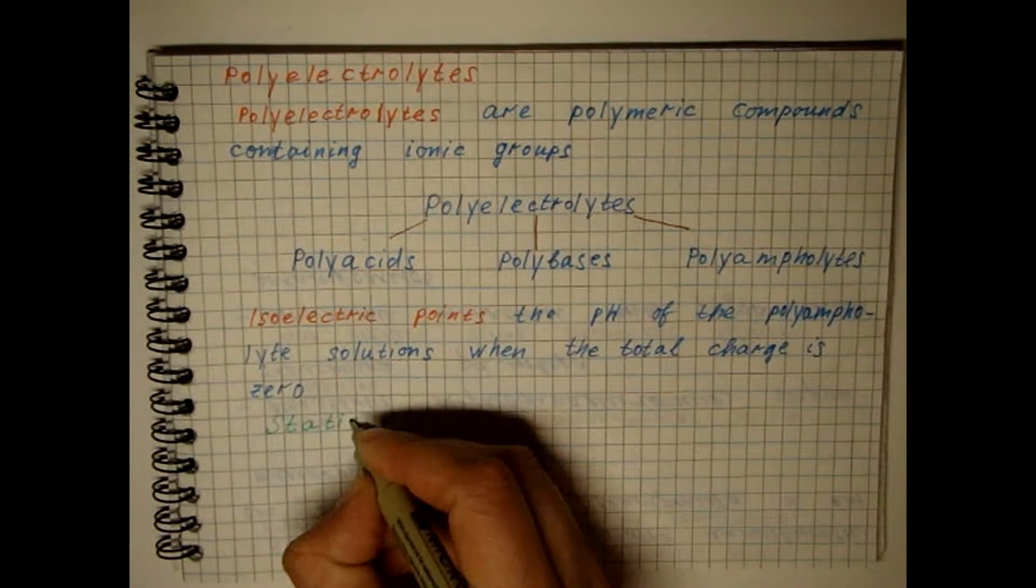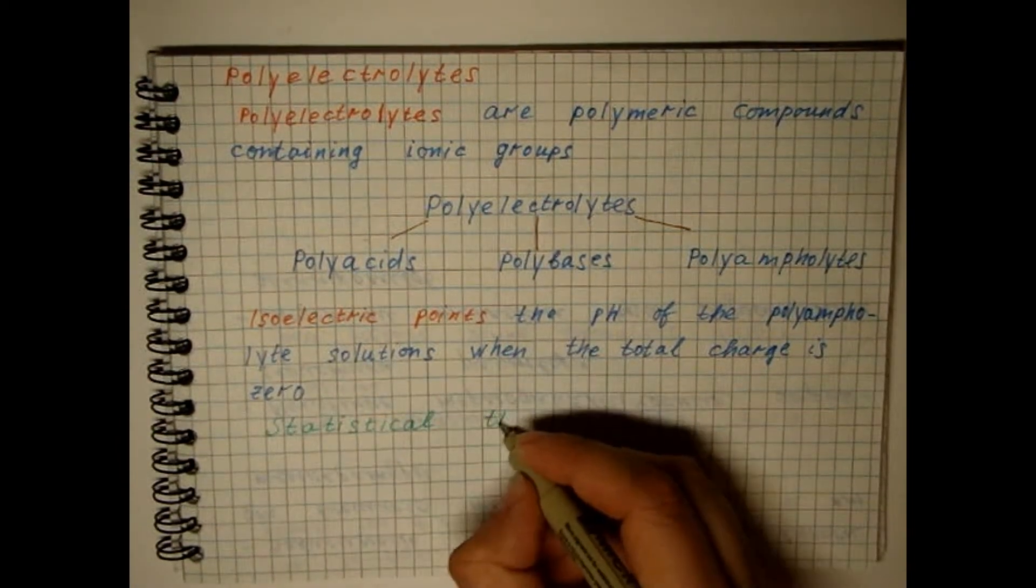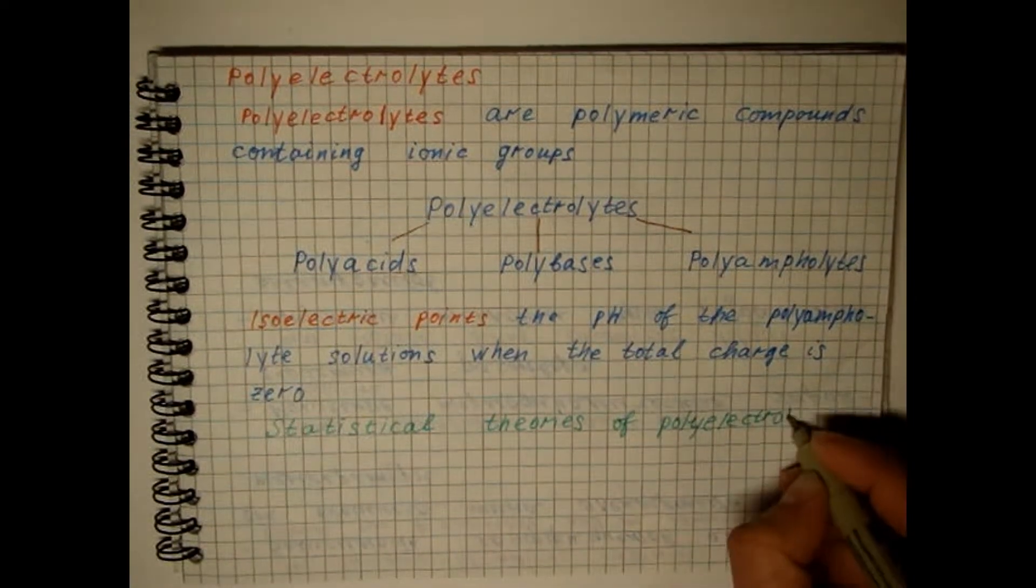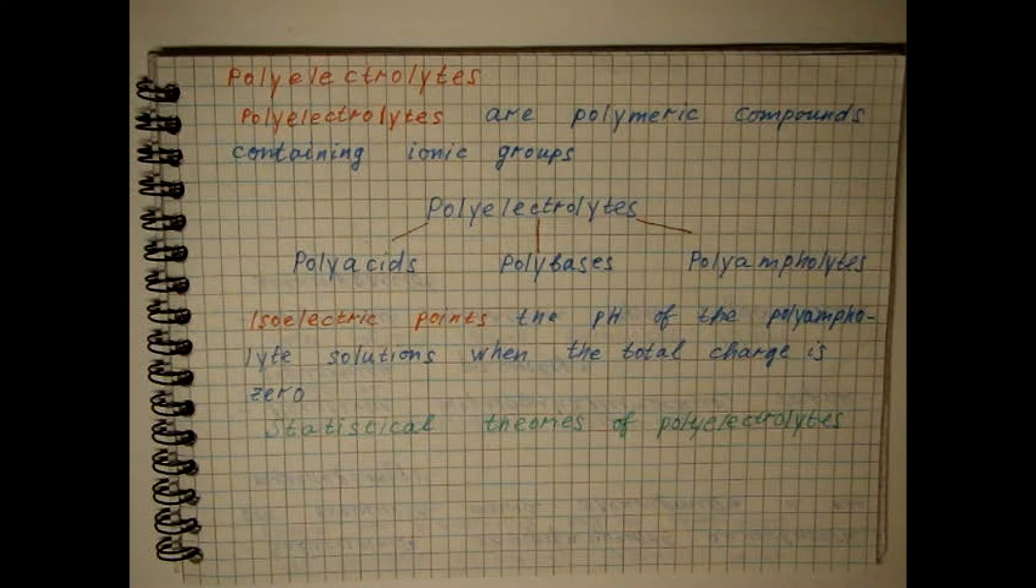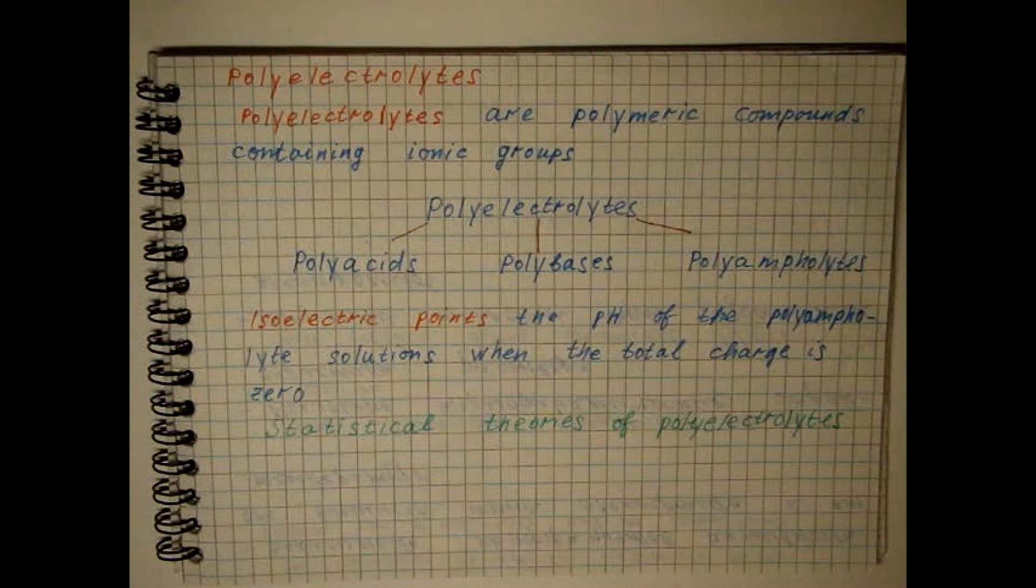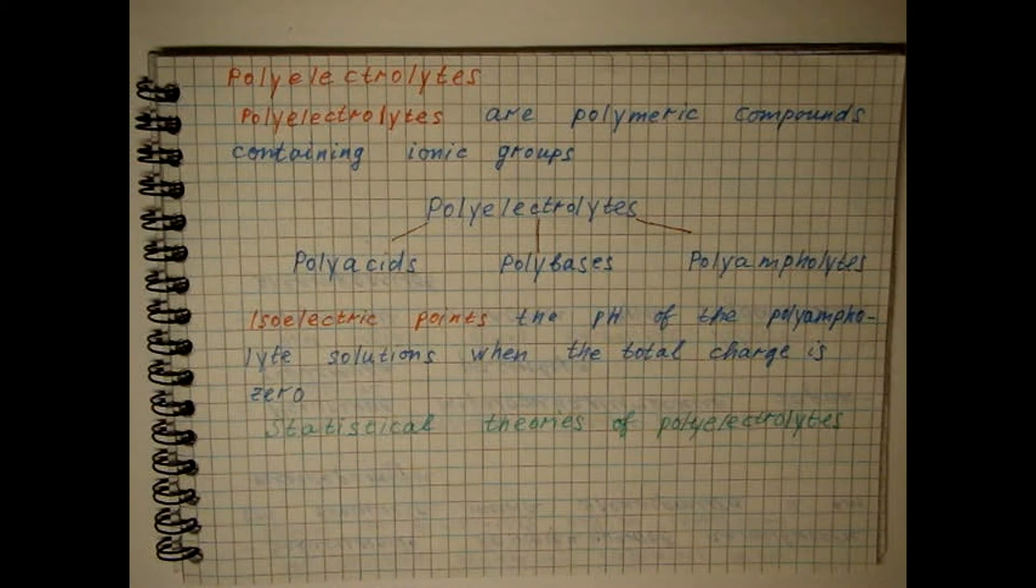Statistical theories of polyelectrolytes can be considered as attempts to apply the Debye Huckel approach to the description of the behavior of multivalent ions. They include calculating the electrostatic field potential of a macro-ion having a predetermined conformation.